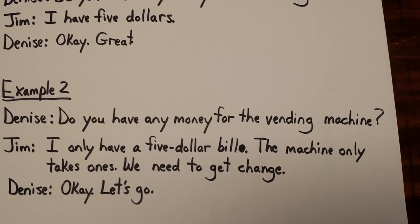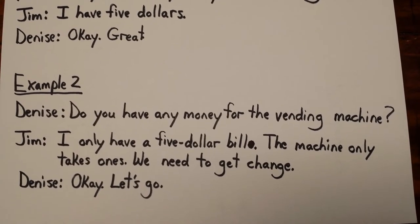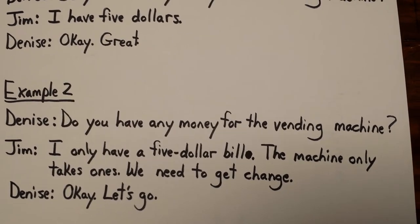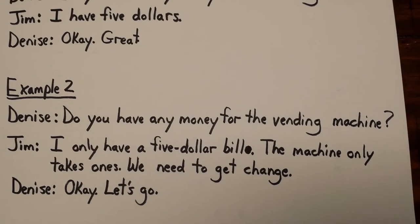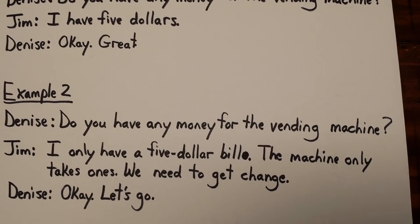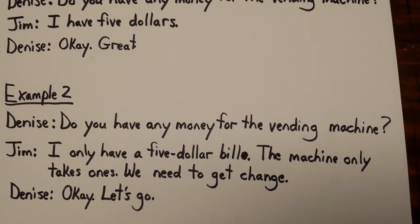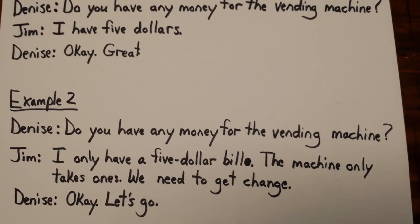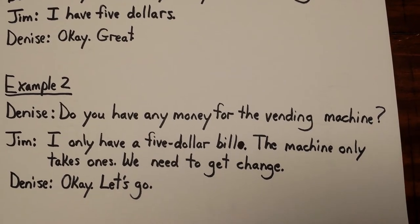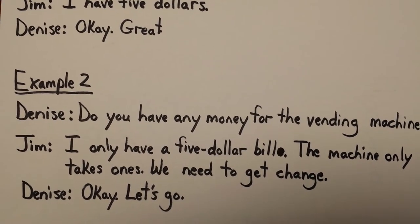Example two — Denise: do you have any money for the vending machine? Jim: I only have a five dollar bill. The machine only takes ones. We need to get change. In this case, it is necessary for Jim to use the word 'bill' because he's talking about the actual object he's holding — it's a five dollar bill. But that will not work in this machine; he needs one dollar bills. He could have also said 'I just have a five' or 'I only have a five' — to say 'I have a five' means I have a five dollar bill. 'The machine only takes ones' means the machine only accepts one dollar bills. 'To get change' means he wants to exchange the five dollar bill for smaller bills or even for coins.